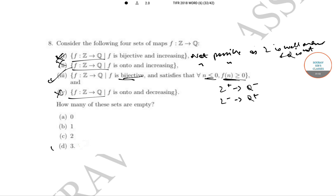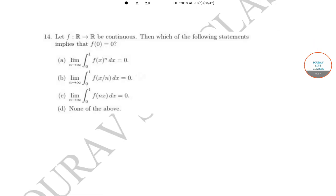The next question: let F be a continuous function. Which of the following statements implies that F(0) = 0? Option A: lim(n→∞) ∫₀¹ f(x)ⁿ dx = 0.